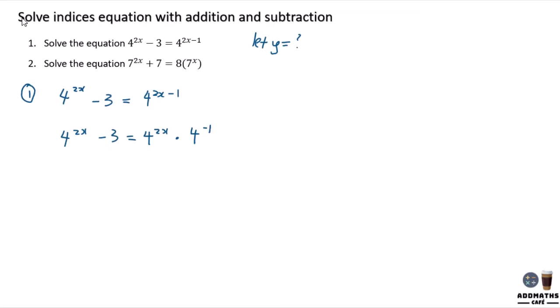And in this case, you can see that 4^(2x) appears a lot of time in this equation. So what we do is let 4^(2x) equal to y. Change all these parts 4^(2x) into y minus 3 equal to y times 4^(-1), which will be 1 over 4^1 here.